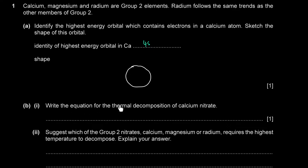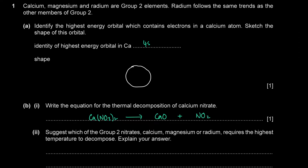Part B asks for the equation for the thermal decomposition of calcium nitrate, Ca(NO3)2. Calcium is 2+ and nitrate is 1−, so we have 1 calcium and 2 nitrate ions. When calcium nitrate decomposes, it forms calcium oxide, nitrogen dioxide, and oxygen gas. Balanced: Ca(NO3)2 → CaO + 2NO2 + ½O2.